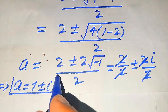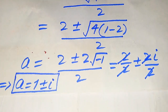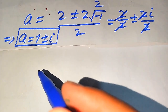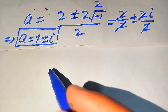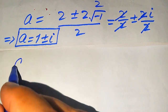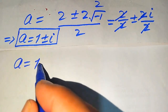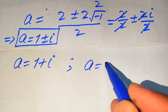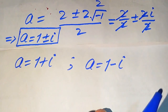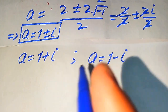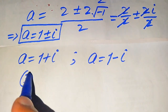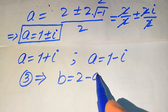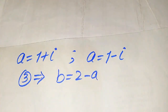We now have two values of a: the positive case gives a equals 1 plus i, and the negative case gives a equals 1 minus i. To find the corresponding values of b, we use equation number 3, which states b equals 2 minus a.